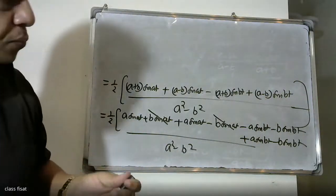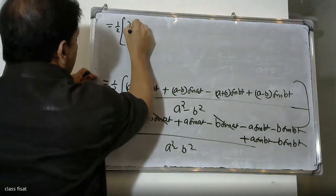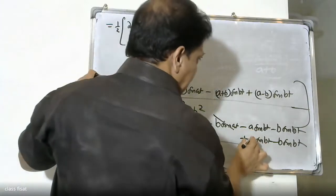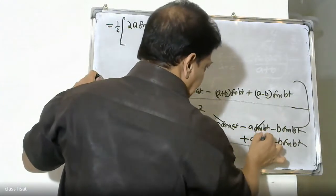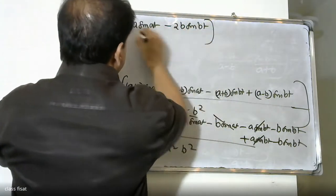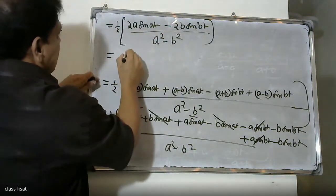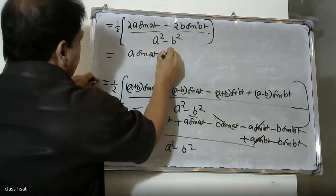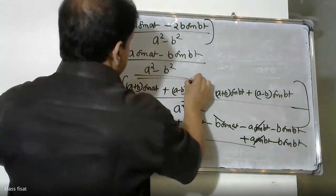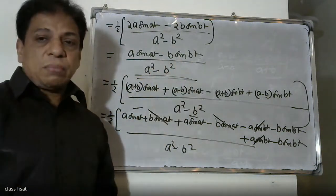This simplifies to (1/2) times [2a·sin(at) minus 2b·sin(bt)] divided by (a squared minus b squared). Therefore, the final answer is: inverse Laplace of s squared over (s squared plus a squared)(s squared plus b squared) equals (a·sin(at) minus b·sin(bt)) divided by (a squared minus b squared).